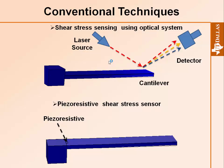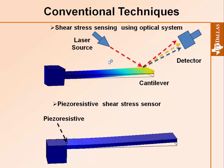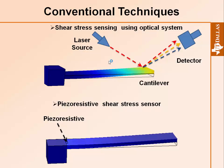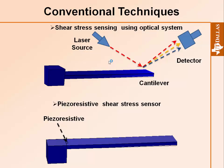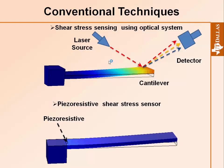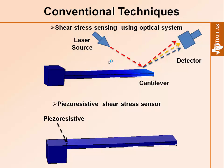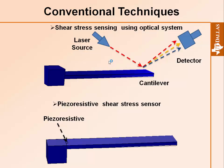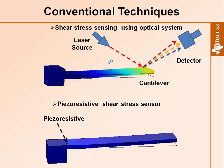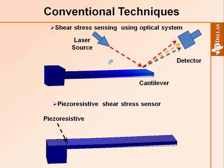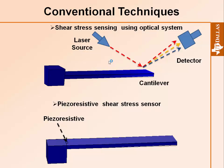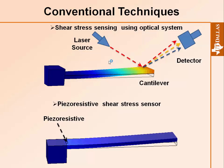The two most conventional techniques used to detect shear stress are: first, a laser setup with a cantilever — due to surface stress the cantilever bends, which changes the reflected beam, allowing shear stress detection. The other technique, widely used in MEMS, is piezoresistive — when the cantilever bends, the piezoresistive value changes. These sensors are very accurate but the price is very high.